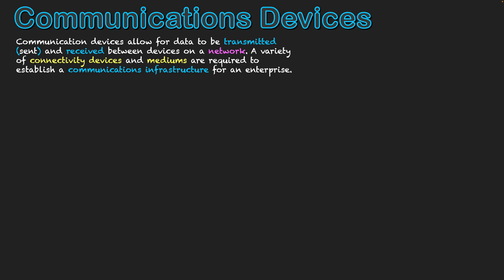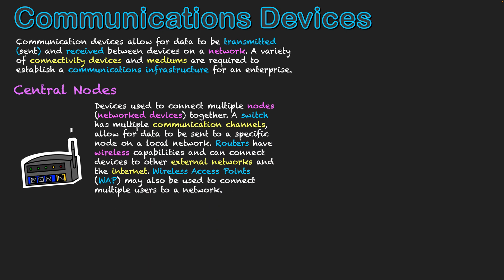We'll talk about devices and mediums related to that, starting with central nodes. These are devices used to connect multiple nodes or network devices together. One of the main ones used locally is known as a switch, which has multiple communication channels as well as multiple ports to physically connect devices with each other through the use of cabling.